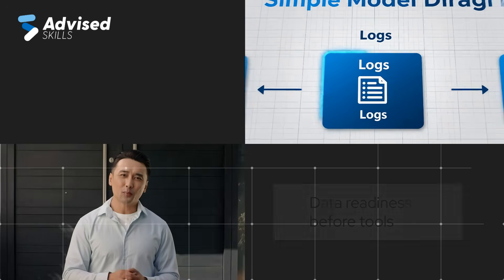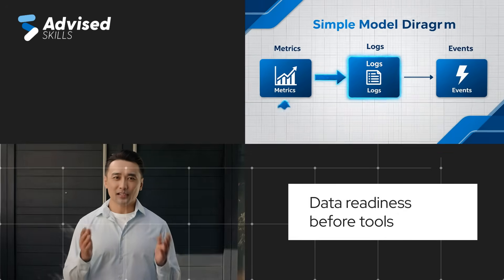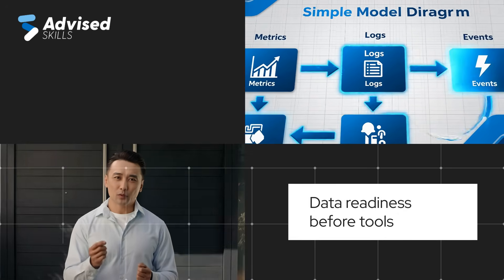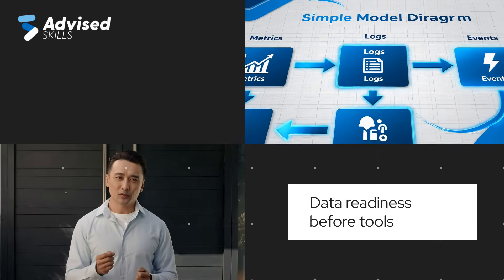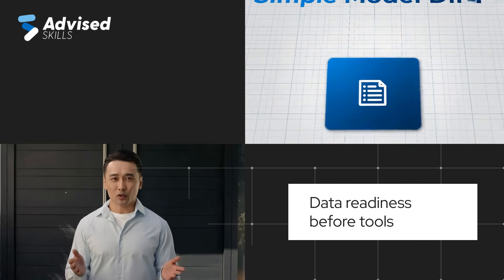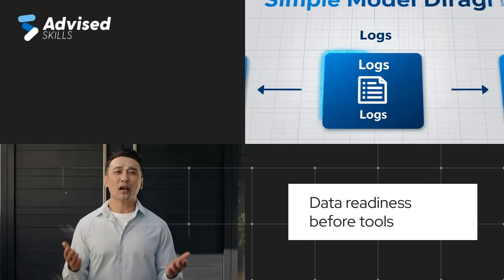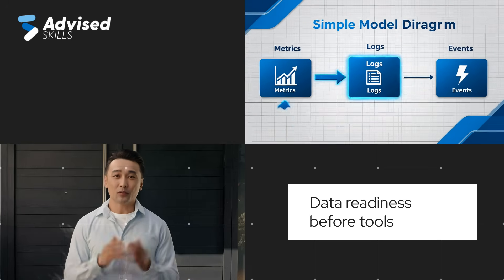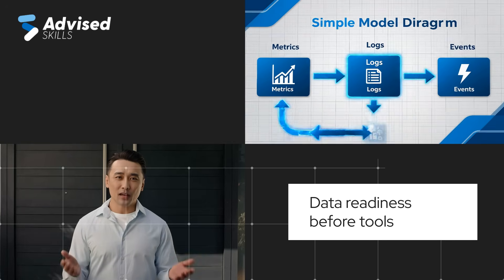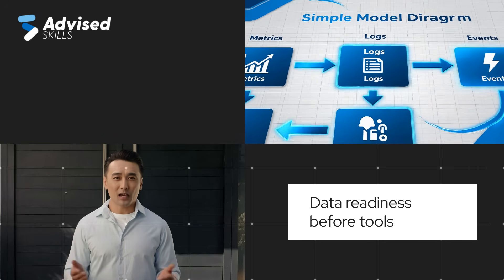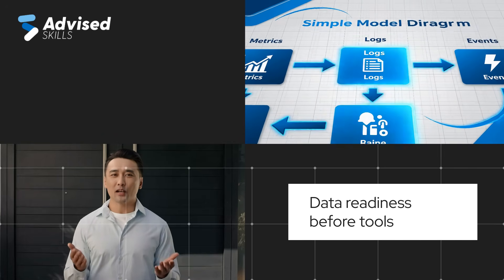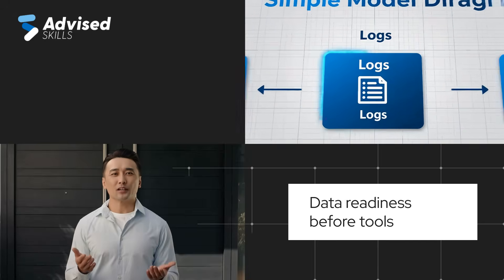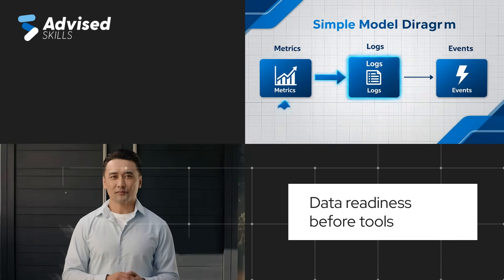Most AIOps initiatives stumble for one reason: teams connect every source but do not normalize fields or align naming. A better approach is a minimum viable operational data model. The three pillars are metrics, logs, and events — and AIOps becomes powerful when you can connect them with consistent identifiers.